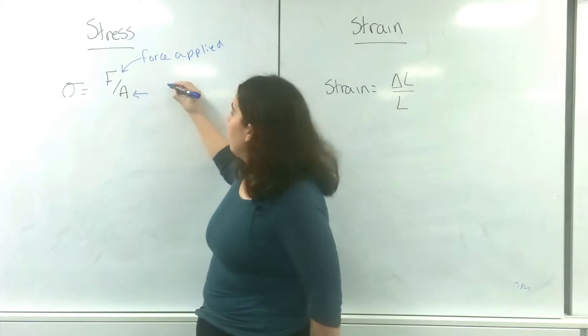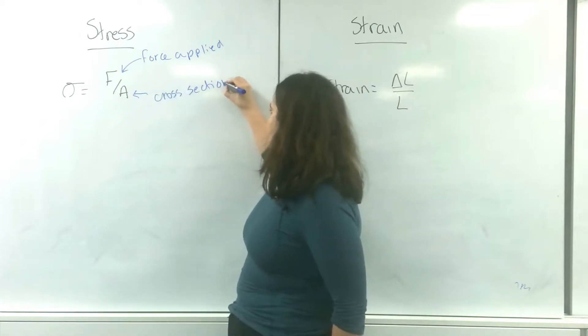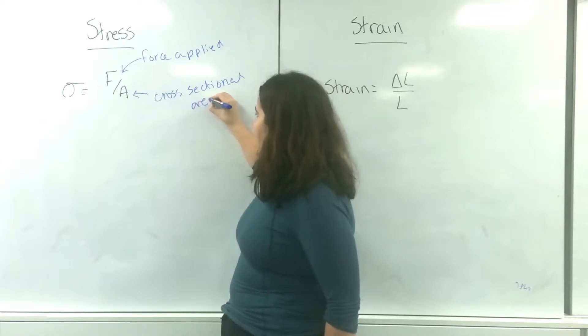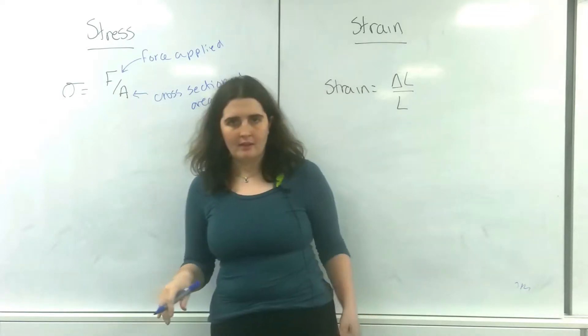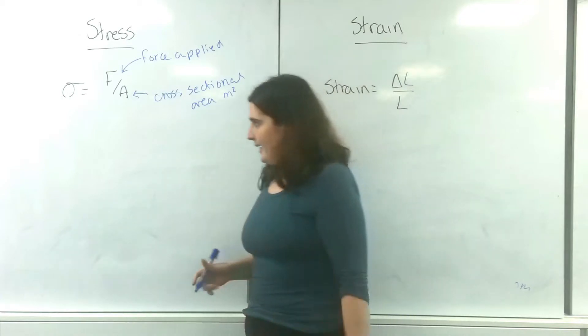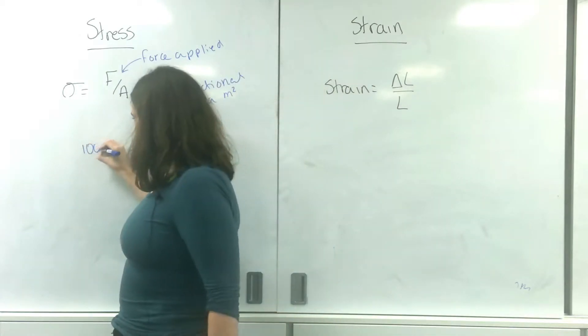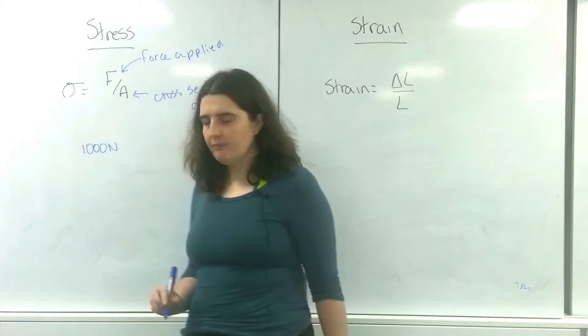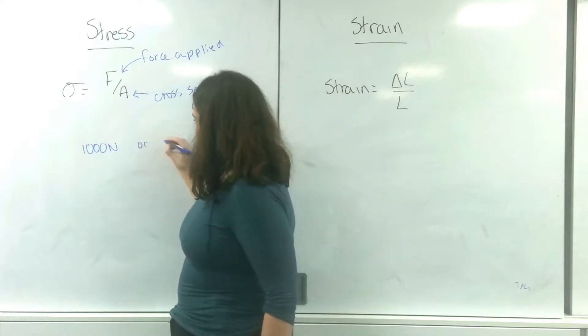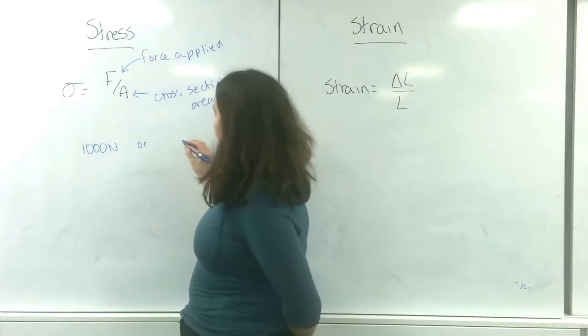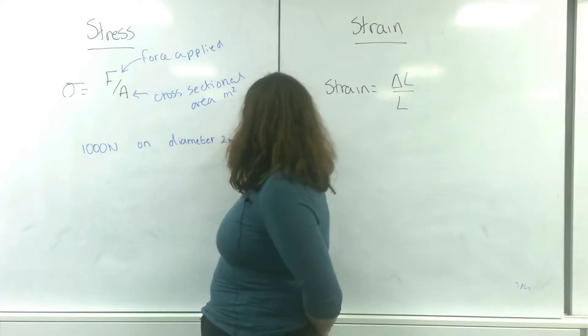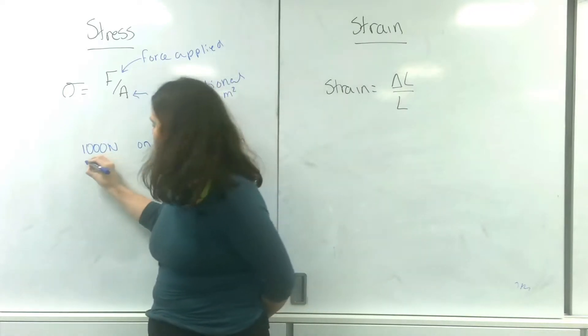And this area here is the cross-sectional area, and it has to be in meters squared. So let's say I had a thousand newtons on a wire that had a diameter of two millimeters. Find the stress.